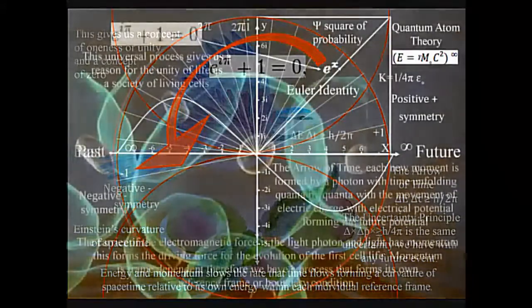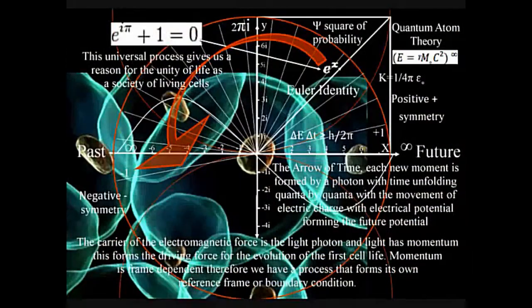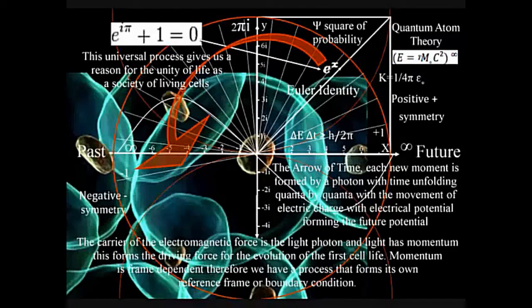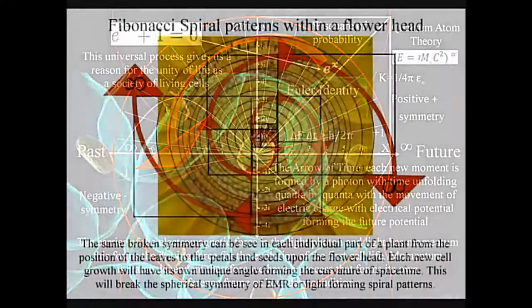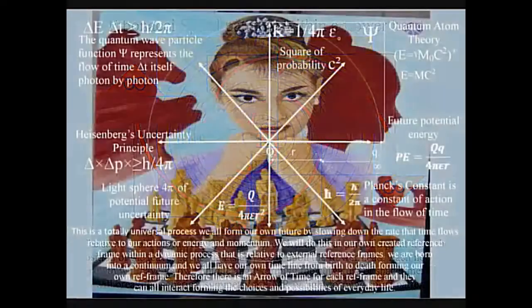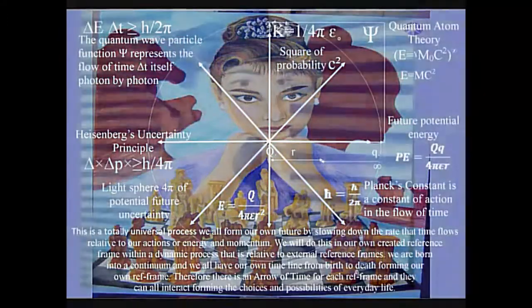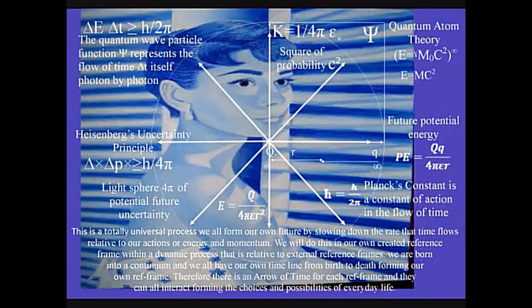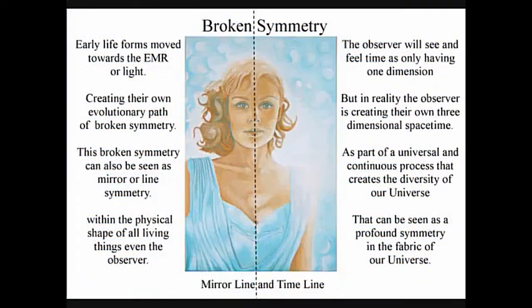The evolutionary process, and therefore all life, is based on the geometry, and therefore the mathematics of this one universal process. This can best be seen in plant life, in the form of the Fibonacci spiral, being visible in almost every type of plant life. Intelligent life will form its own evolutionary path out of this process, relative to its own energy. Because energy, space, and time are interlinked by this process, the timeline of the individual life form will be visible as line symmetry within the physical shape of each individual life form.